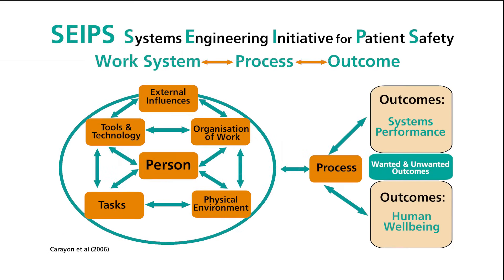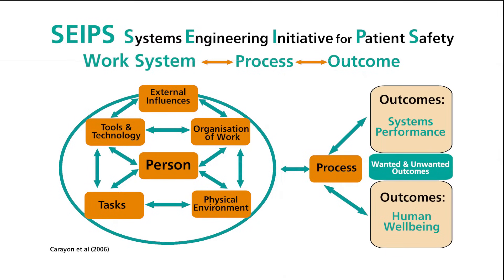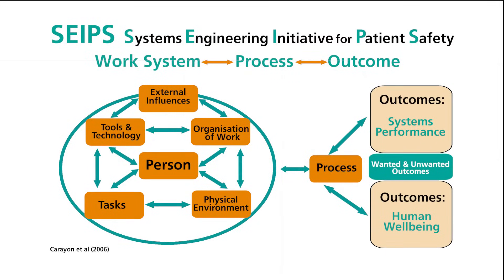The Donabedian model is split into three areas: the work system, the process that pertains to the work system, and the outcomes, which are dual in nature, capturing outcomes relating to systems performance and human well-being.